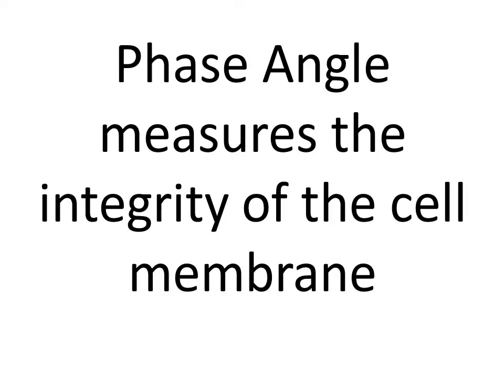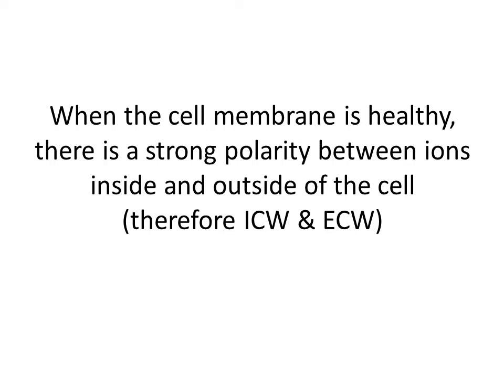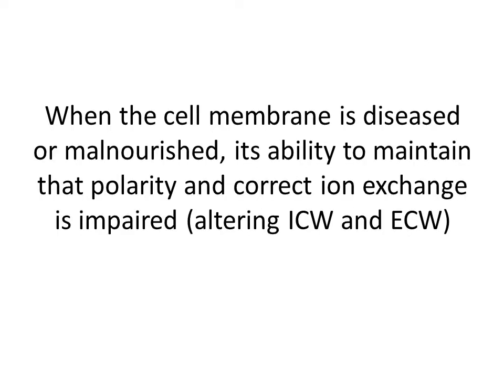How is this possible? Phase angle measures the integrity of the cell membrane — that is, the ability of the cell to function. When the cell membrane is healthy, there is a strong polarity between ions inside and outside of the cell. When the cell membrane is diseased or malnourished, its ability to maintain that polarity and correct ion exchange is impaired, which alters the intracellular water and the extracellular water balance.